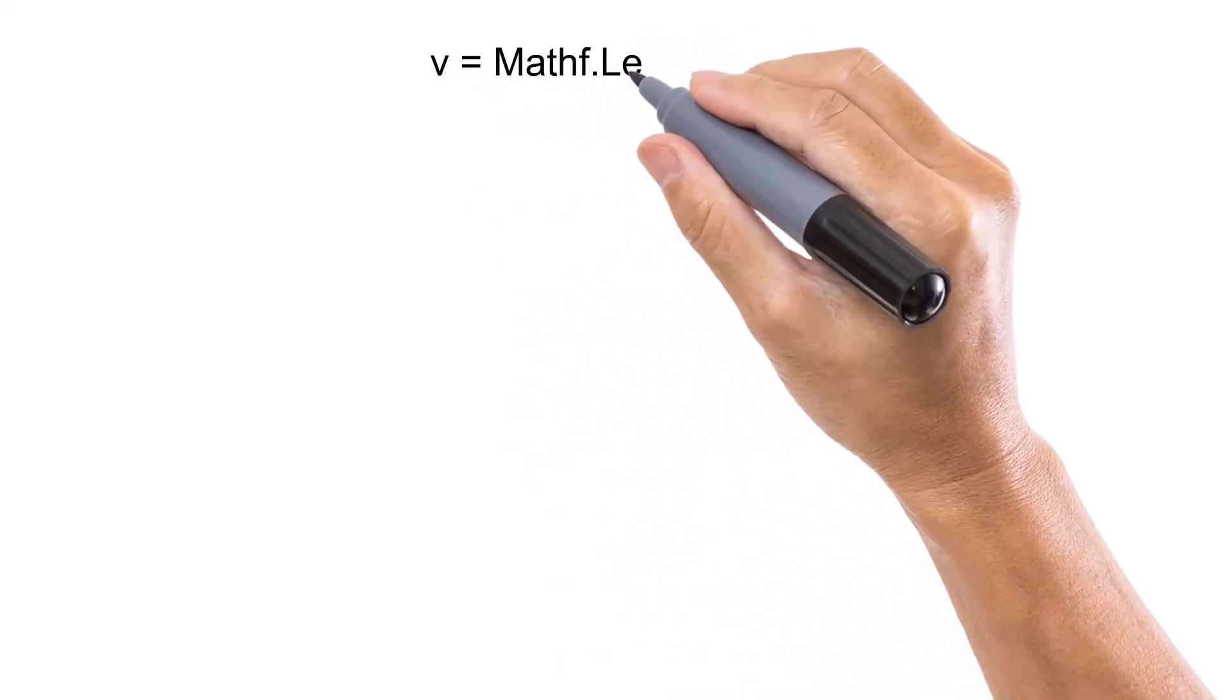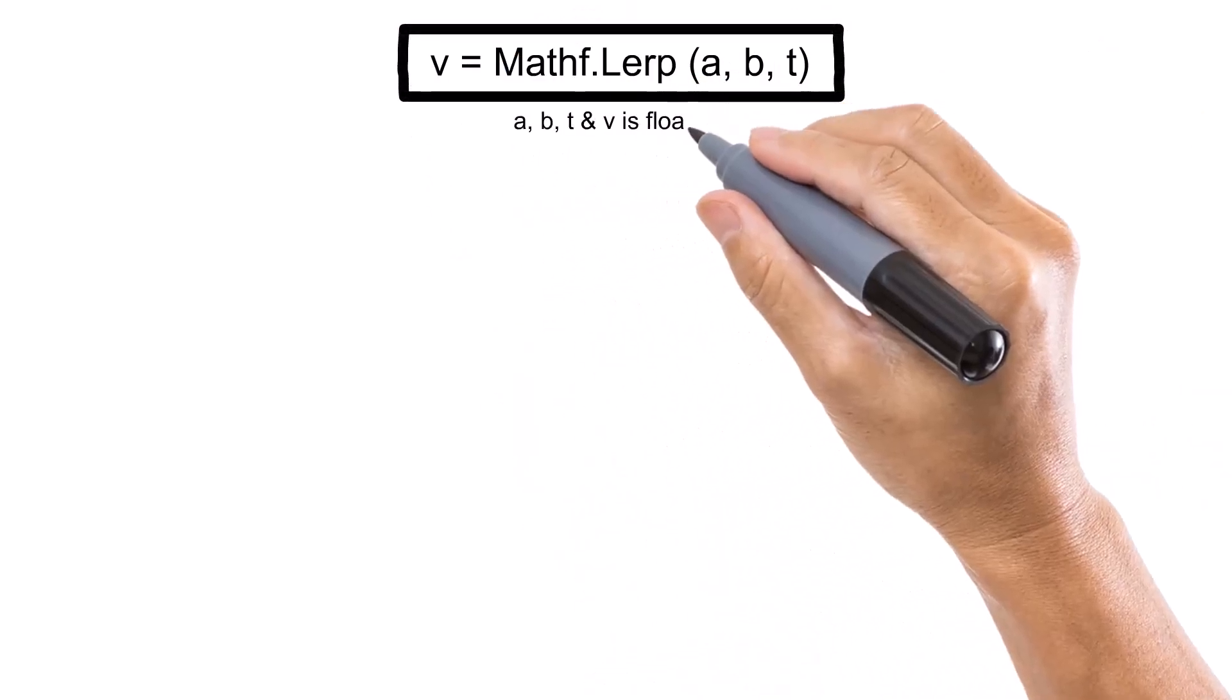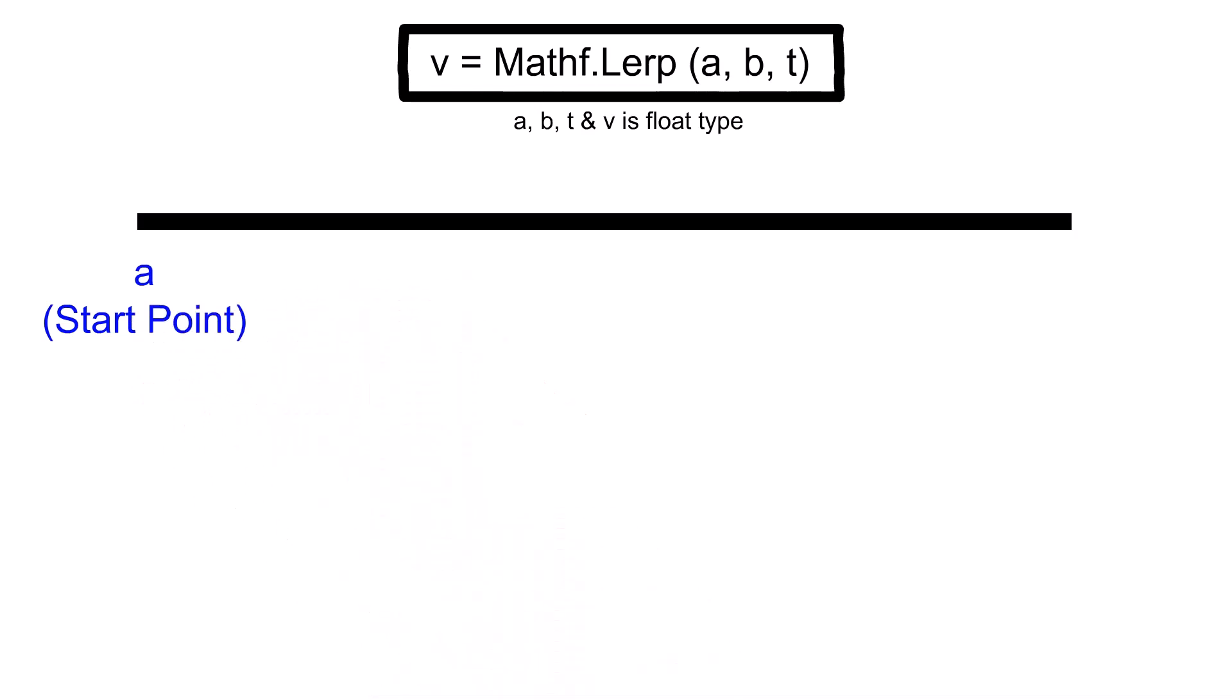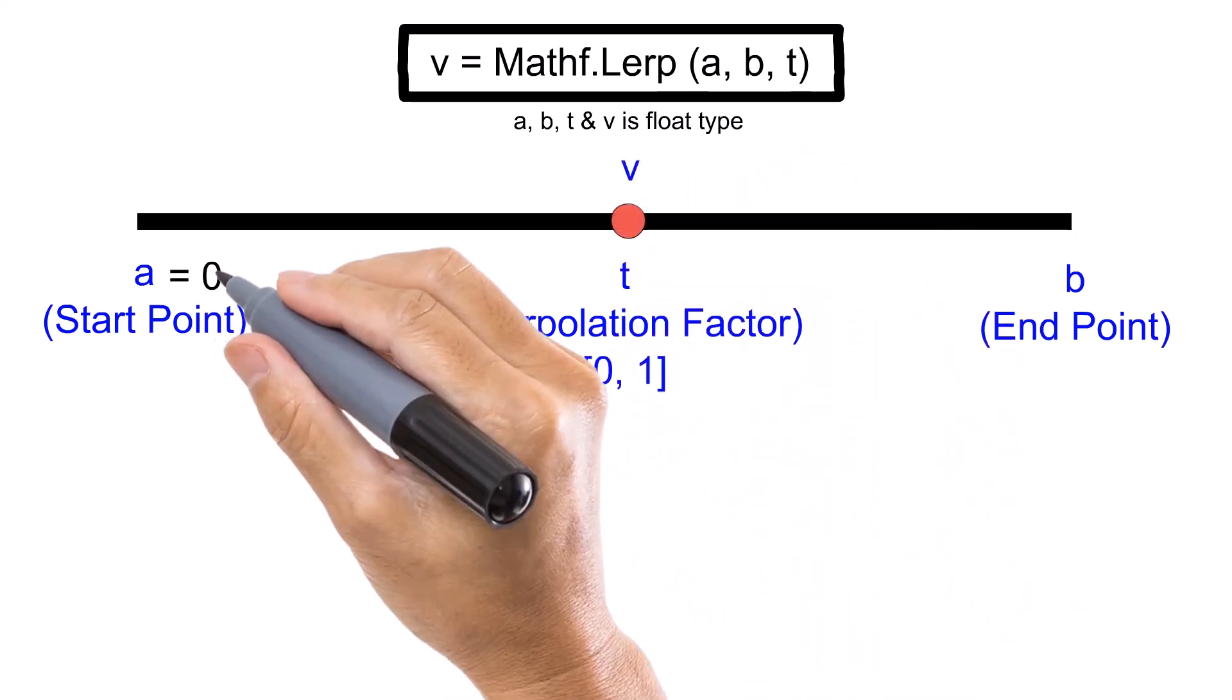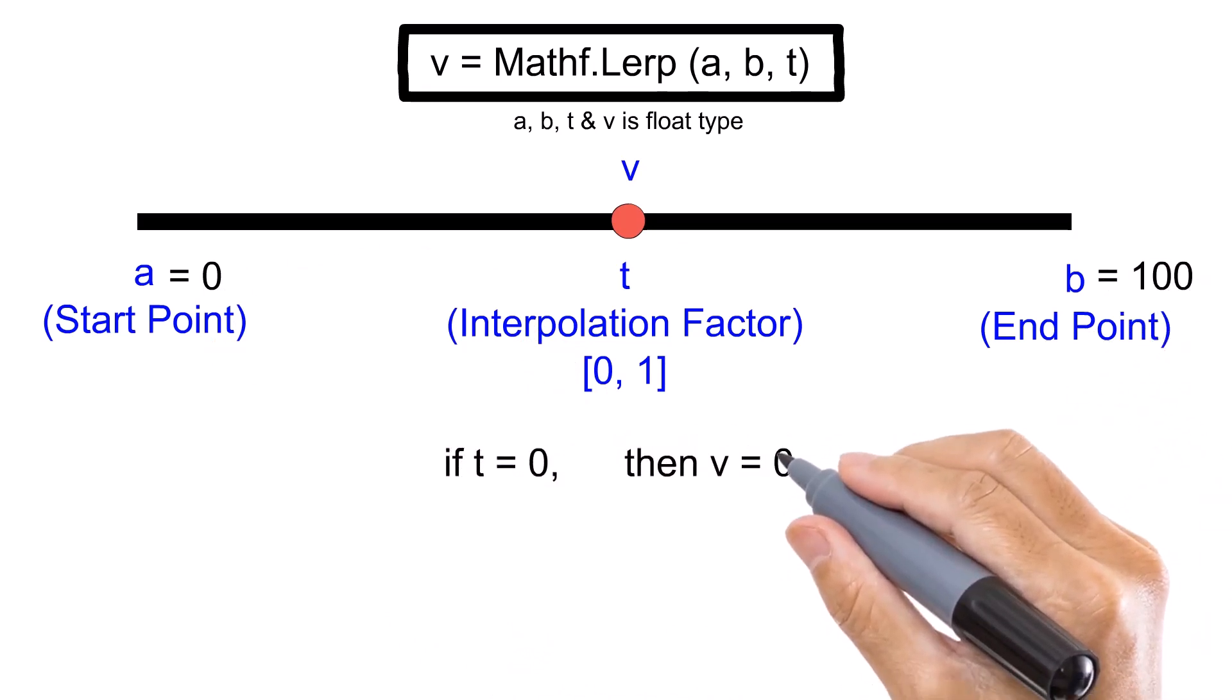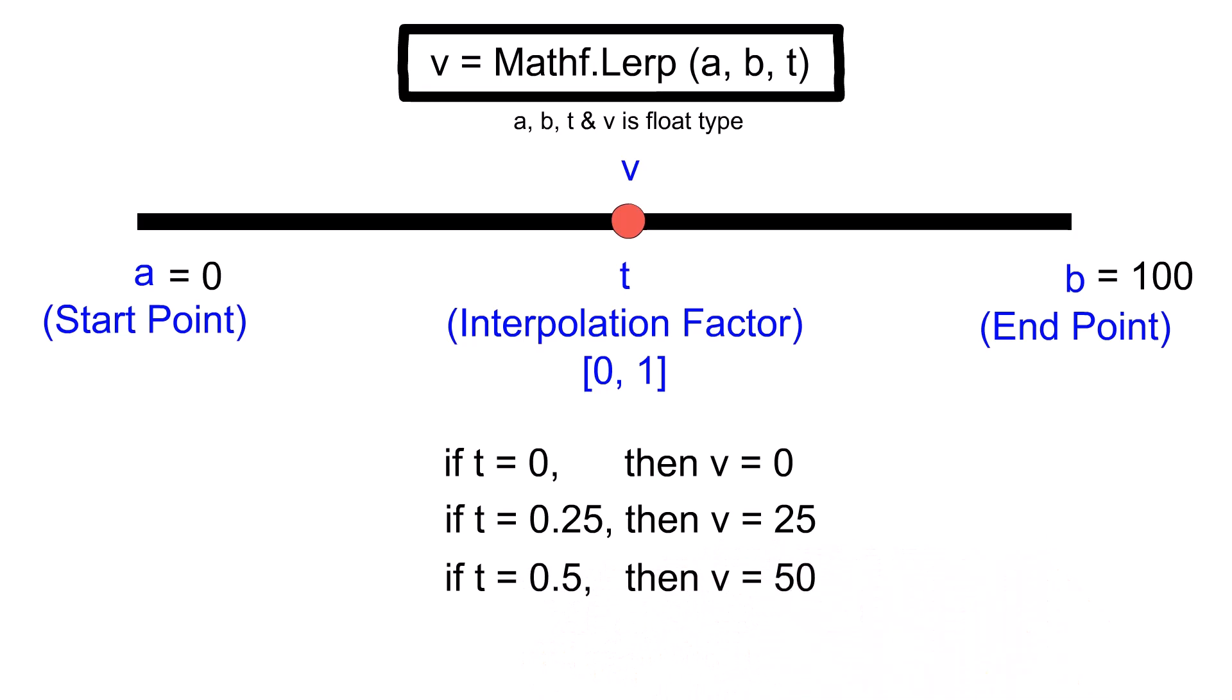The Mathf.Lerp function returns a value that is linearly interpolated between A and B based on the value of T. Here, A is the starting point on a number line, and B is the endpoint. T is the interpolation factor with a value between 0 and 1. When T is 0, the function returns A, and when T is 1, it returns B. If T is between 0 and 1, it returns a value that is proportionally between A and B.